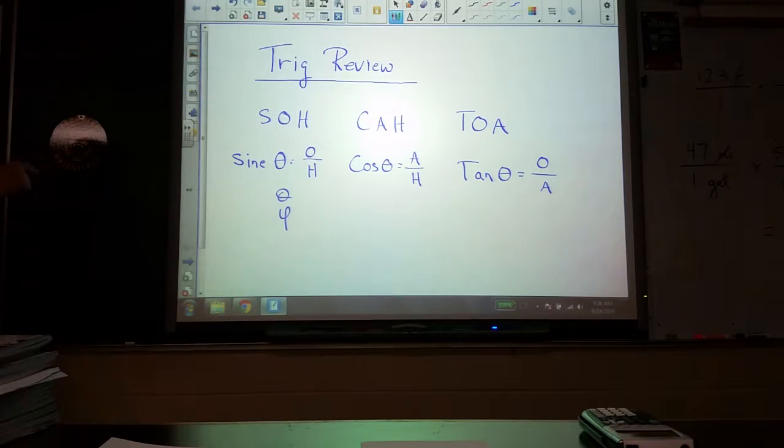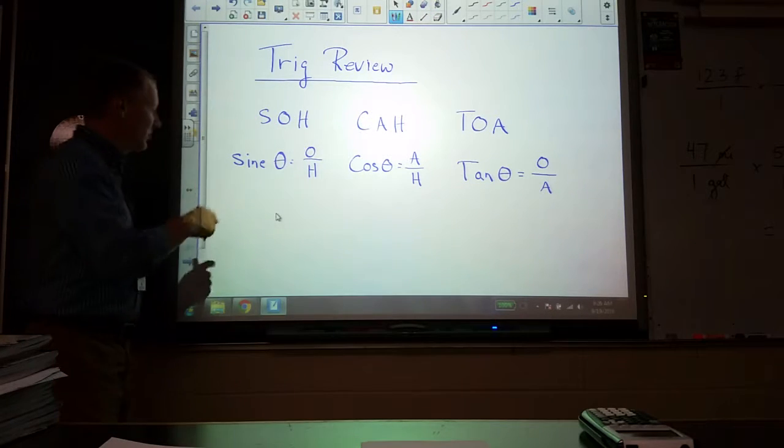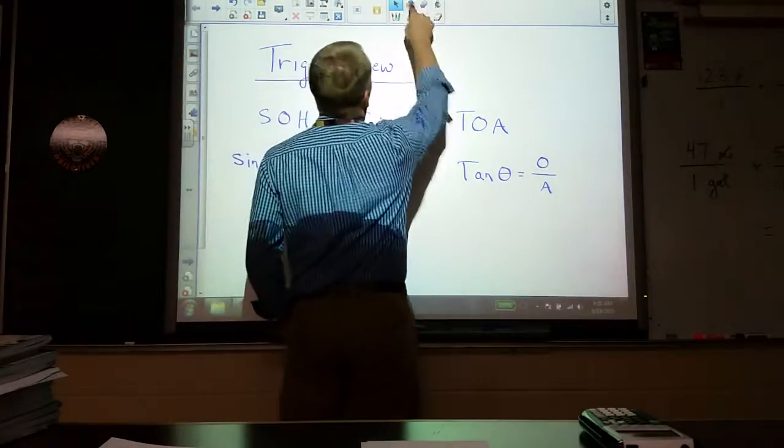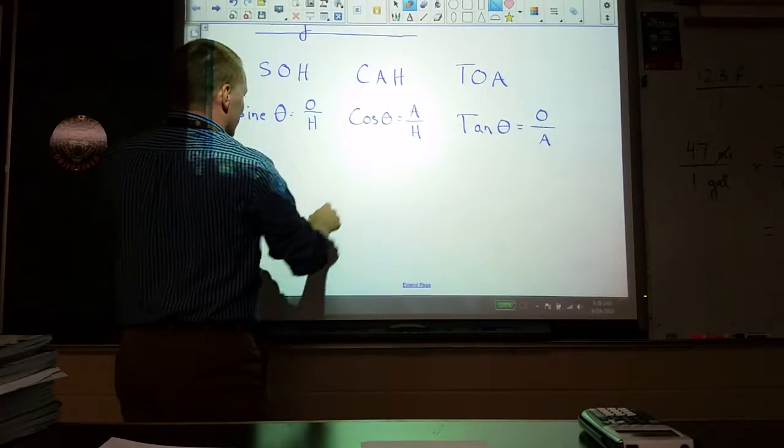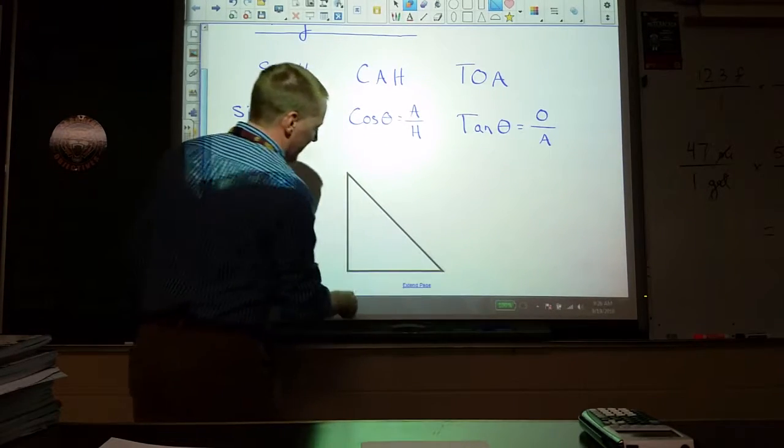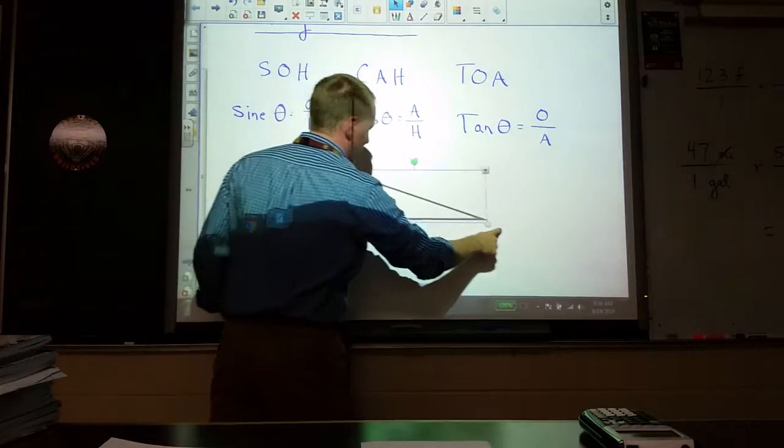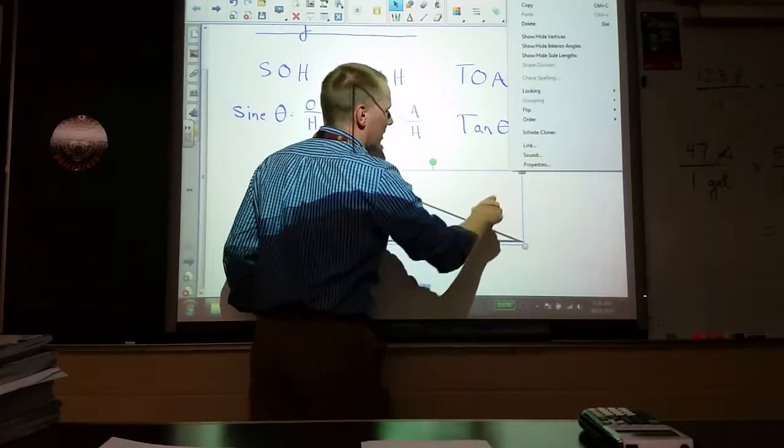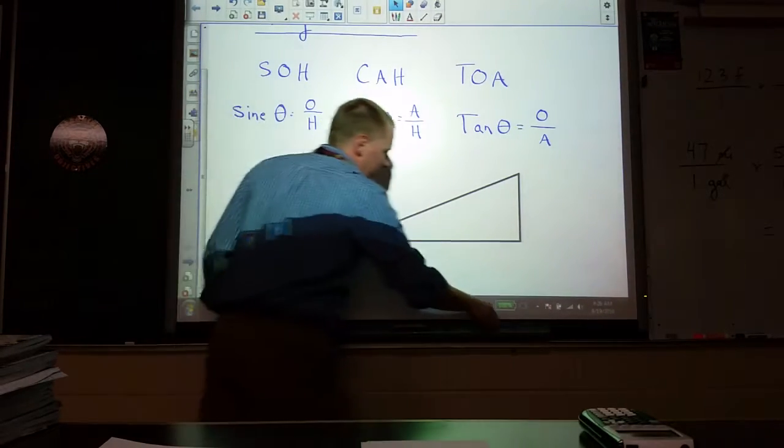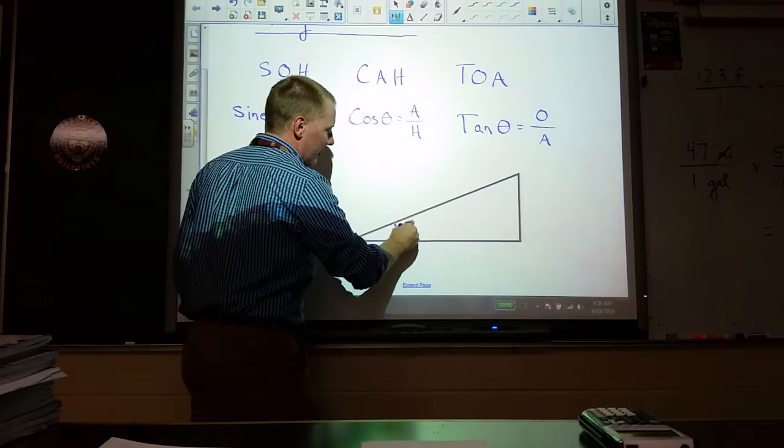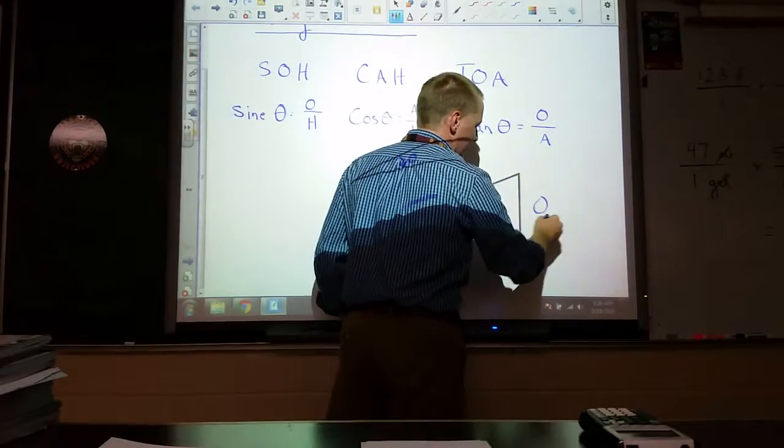They are all related to a right triangle, which we could probably draw. So here's how we're used to looking at it. We'd put an angle theta there, and then define the sides based on that angle. So we'd have the opposite side.